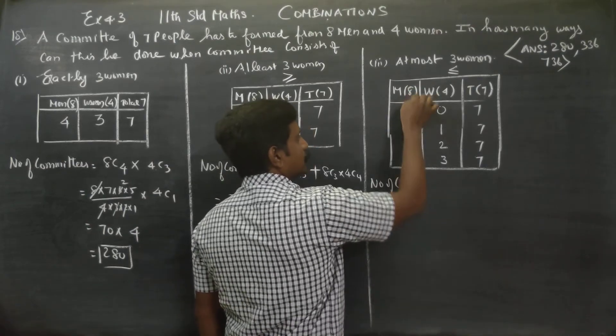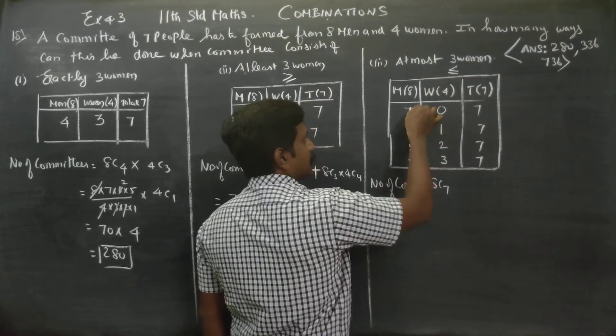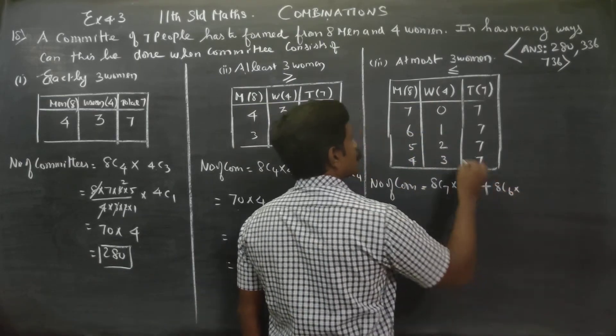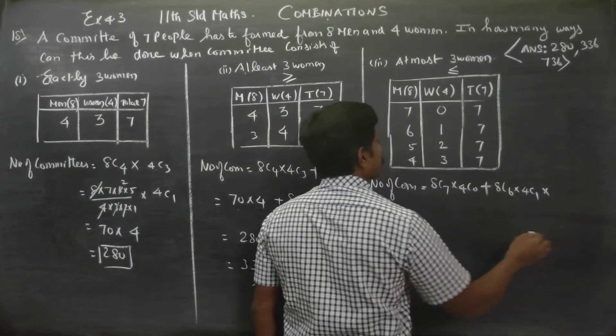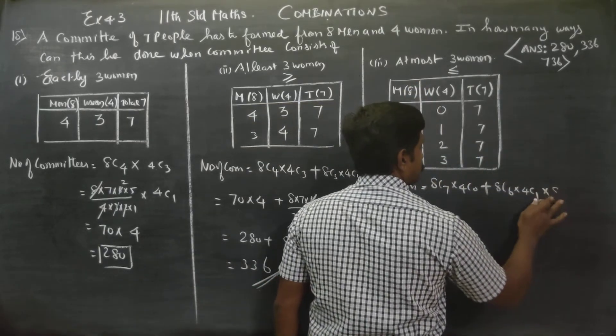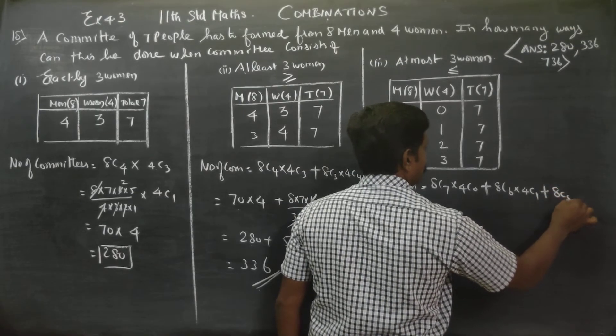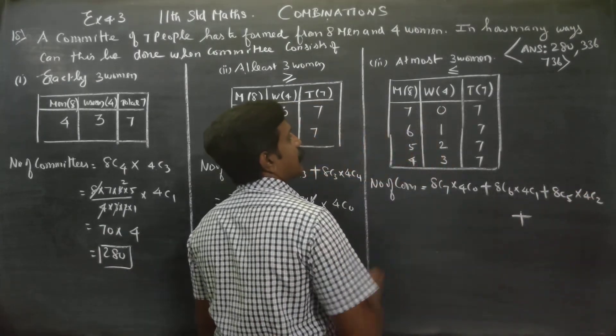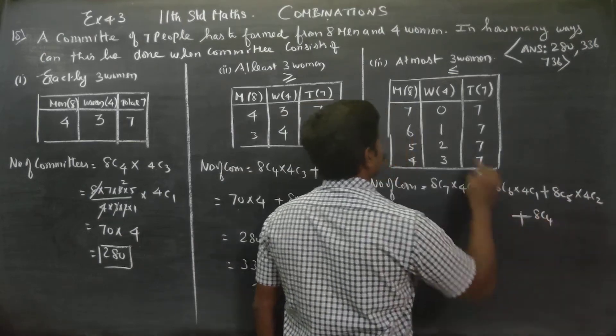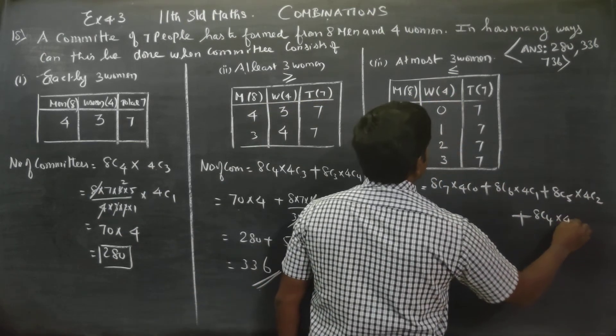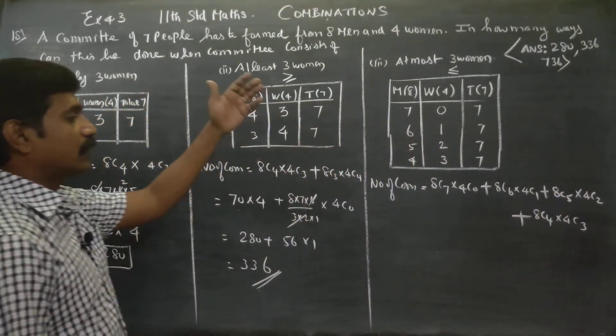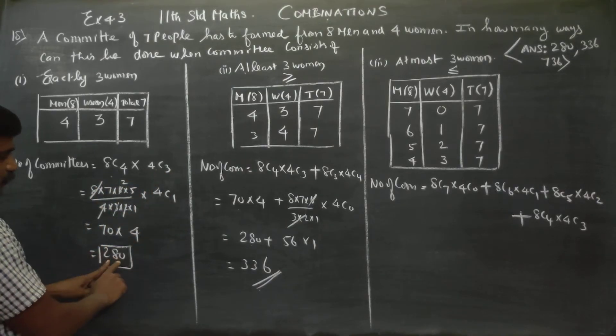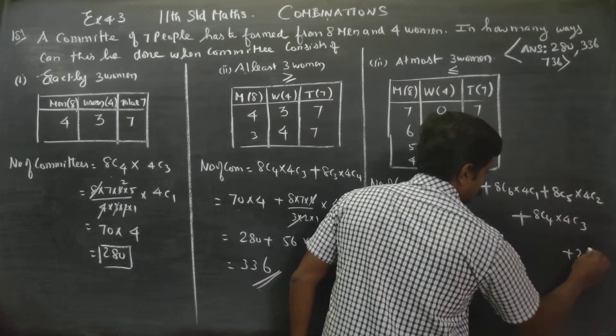Number of committees equals 8C7 times 4C0 plus 8C6 times 4C1 plus 8C5 times 4C2 plus 8C4 times 4C3. The answer is 736. All the committees are formed.